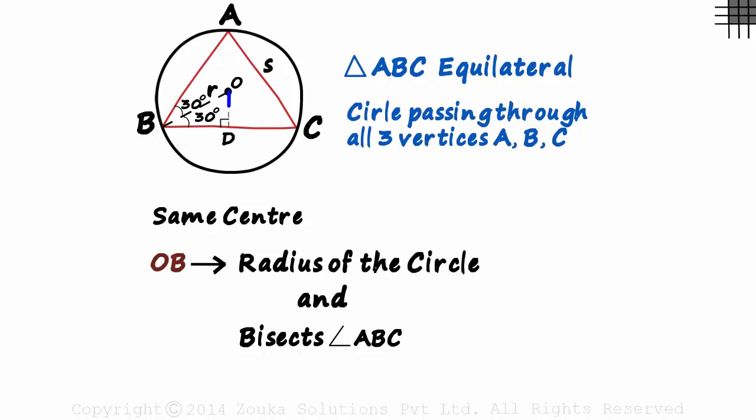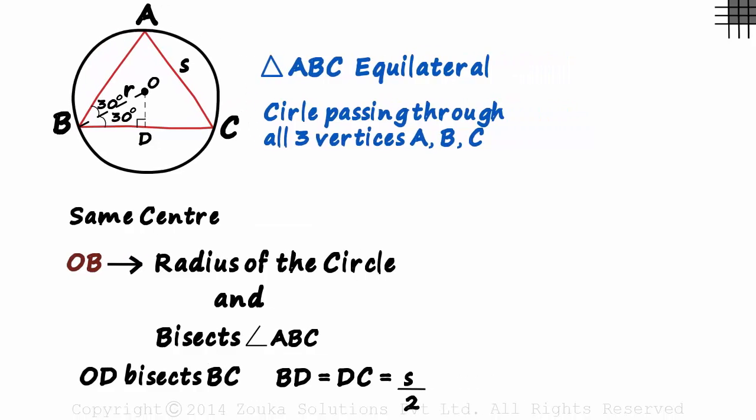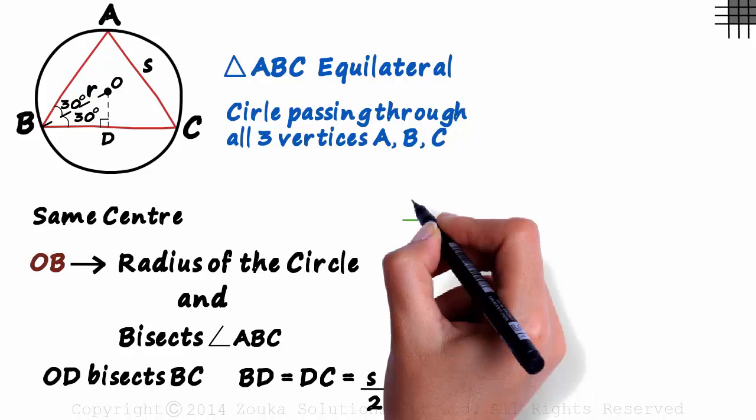This perpendicular bisects side BC. BD and DC both will equal s by 2 units. Deriving a relation is pretty simple now. Just look at triangle OBD.